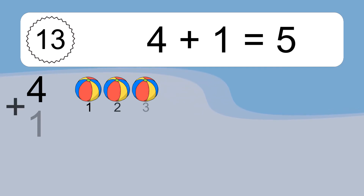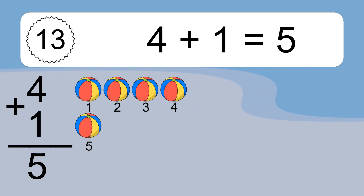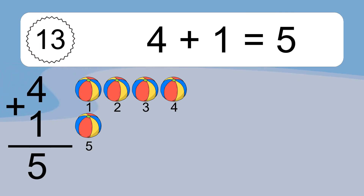4 plus 1 equals what? 4 plus 1 equals 5. Let's count it. 1, 2, 3, 4, 5.